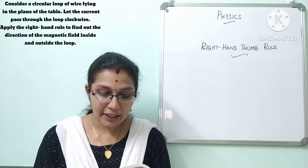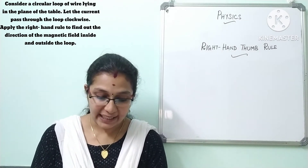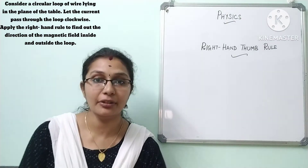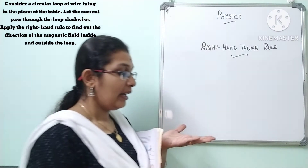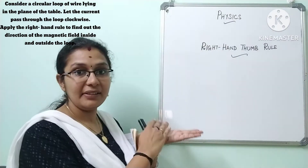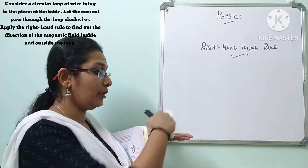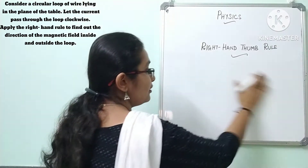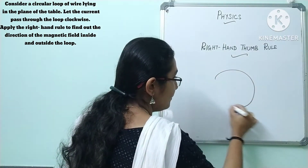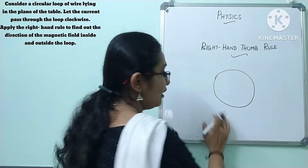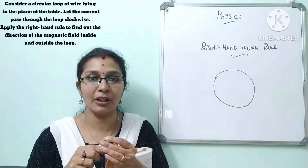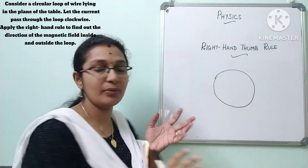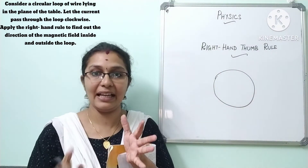Consider a circular loop of wire lying in the plane of a table. So we are going to consider a table — consider this as the table — and we are going to consider a circular wire on it. This is your table and this is your circular wire. For now we don't consider any connections.